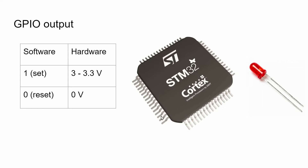Any microcontroller has pins, or external wires. Using GPIO output mode, we can control the state of these pins — we can write either one or zero. From a hardware point of view, when we set the pin we get three volts, but when we reset it we get zero volts compared to ground. The classical example of GPIO output is controlling an LED — by connecting the LED to one of the pins, we can switch it on or off by setting and resetting the pin.